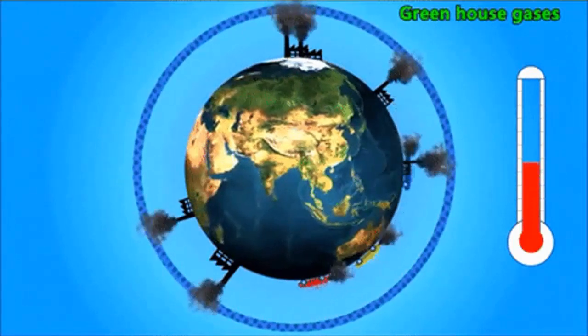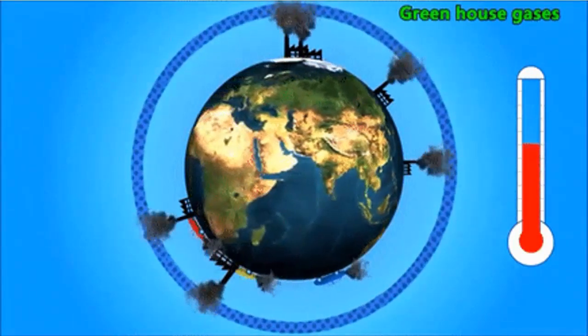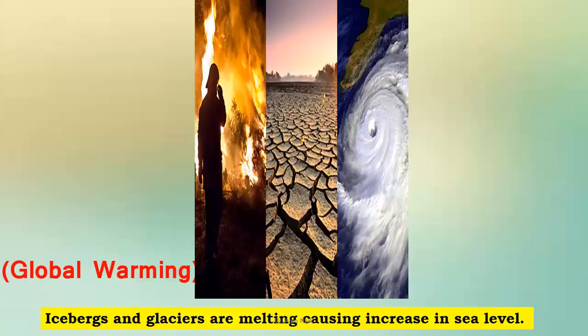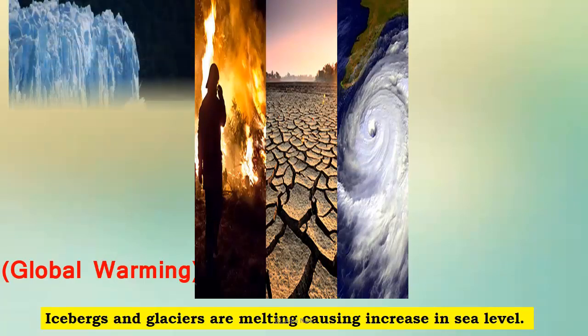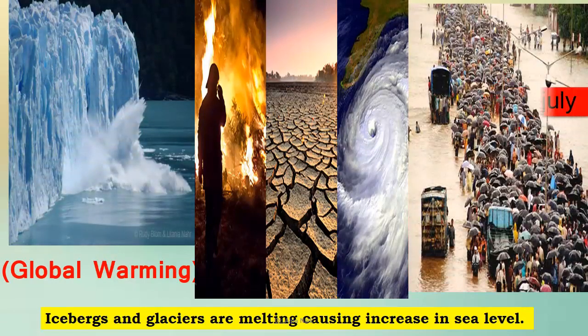What will happen if the entire globe becomes warmer? The effect is global warming. Wherever you go, you find the heat. As a result, icebergs and glaciers are melting. When icebergs and glaciers melt, the sea level increases. As a result, there are side effects including floods. Because of the heat, there is also an effect on the soil, and cyclones occur as the pressure changes. These are the side effects of global warming.